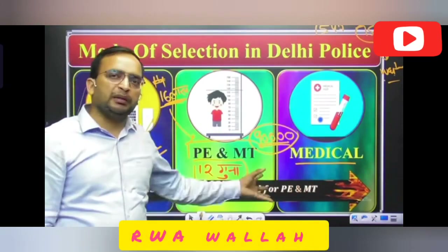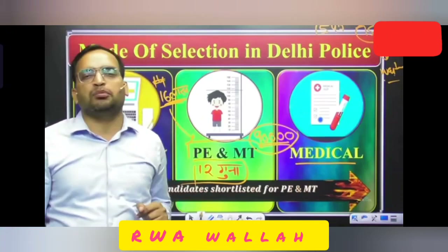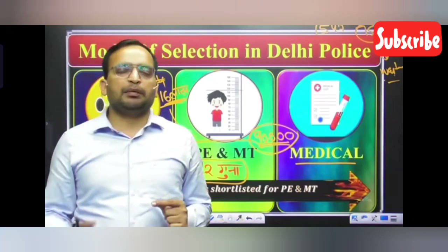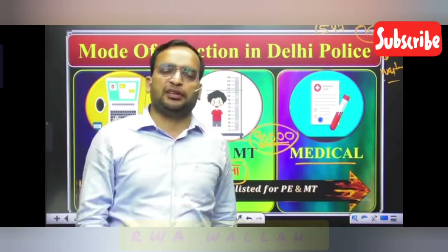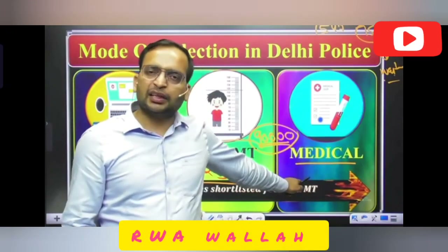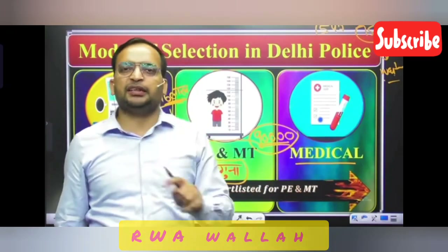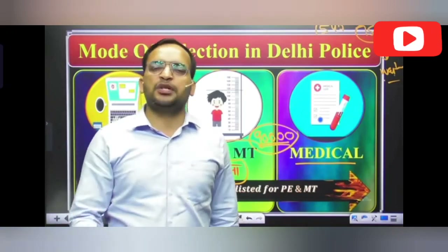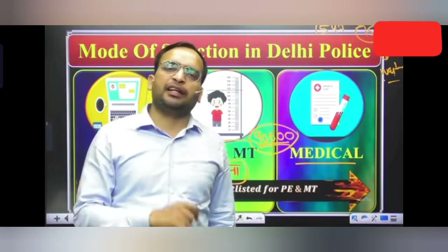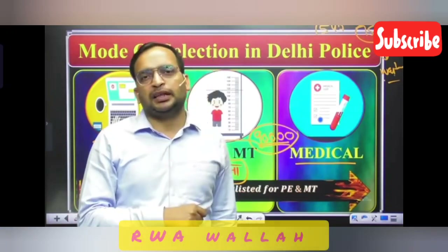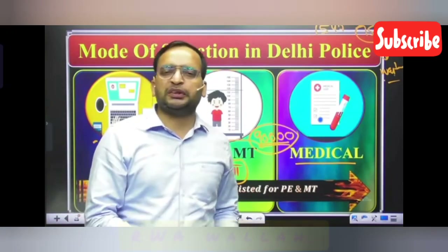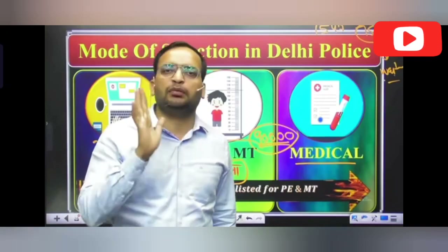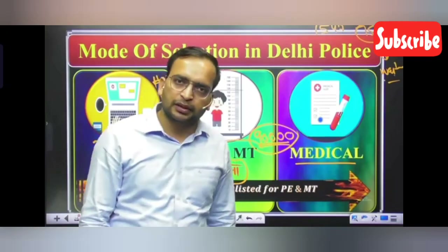Think about it — the last time, the final cut-off was 8,000 rank. If it was 8,000, then it was 5,000 earlier; 69,000 people were taken for physical. OBC — the general candidates were taken at 62 for physical. For SC/ST and other kids, all were taken at 50 for physical.